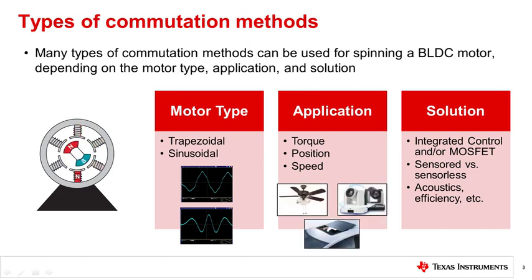Another factor to consider is the application, which can be categorized into torque, position, and speed. Some commutation methods are well suited for certain applications, while they may be not well suited for others. Finally, solutions can vary based on solution availability.